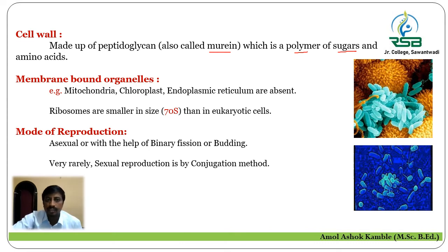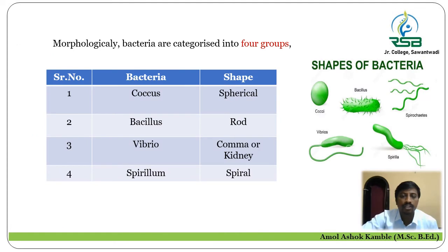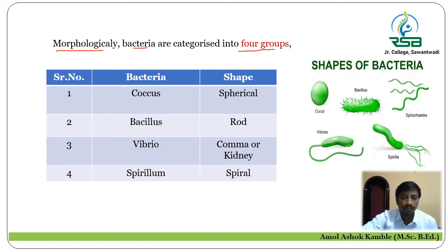These are the general characteristics of Kingdom Monera. This kingdom has a variety of living organisms and the shapes of those organisms differ from one another. Therefore, during classification of organisms in Kingdom Monera on the basis of morphological features, bacteria are categorized into four groups based on their respective shapes.